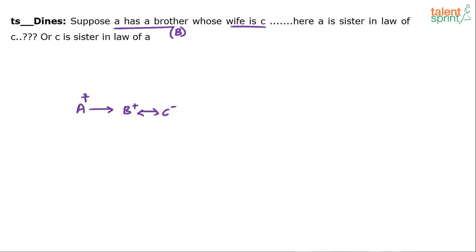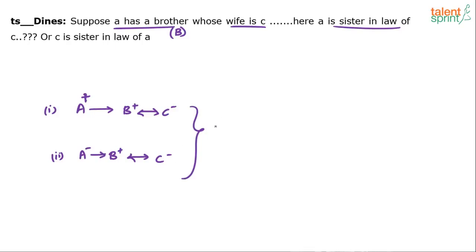In Case 1, take A as male. In Case 2, take A as female. In both cases, A has a brother B whose wife is C. In both cases, C is the sister-in-law of A, because C is A's brother's wife — your sibling's spouse is always your sister-in-law or brother-in-law. So irrespective of whether A is male or female, C will be the sister-in-law of A.